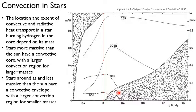If we go more massive than the sun, it's the opposite. We have a lot of convection in the core, and then the envelope, the outer extent, this has a lot of radiative heat transport.